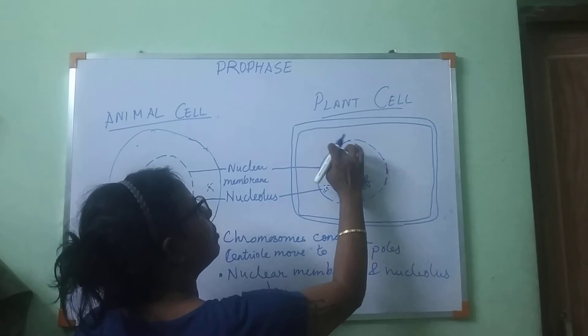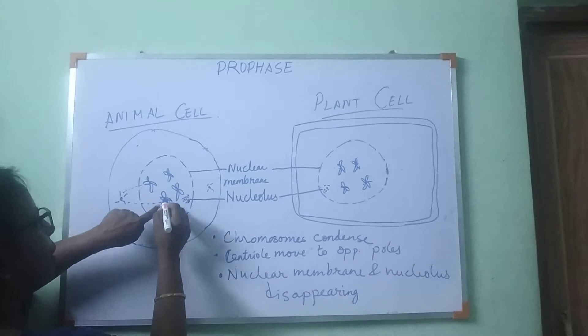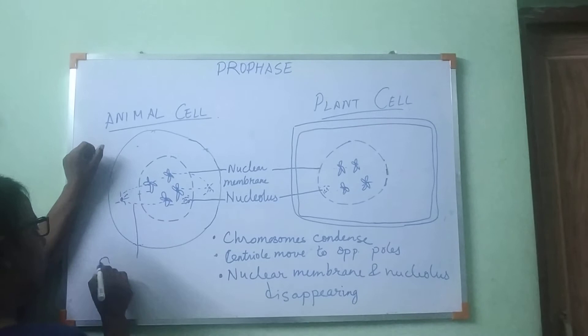The two asters which have come to the opposite poles give out some fibers, and these fibers attach with the centromere. Fibers come out which attach to the centromere, and these fibers are called spindle fibers. This is a very important step.